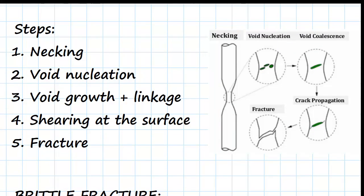The first step is necking, which is shown here — that's where we have the visible thinning of the shape. Then we have void nucleation, as you can see here, which is just where you have the starts of the formation of some voids.